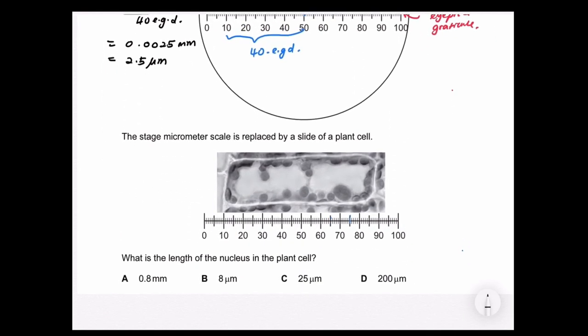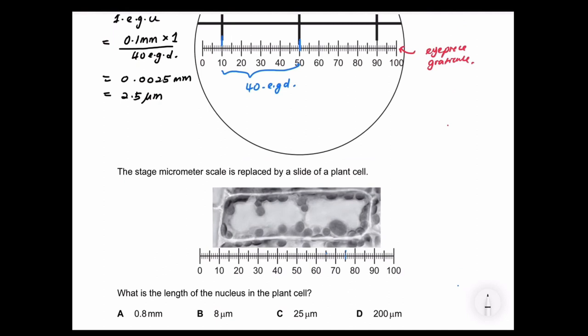Now look, read the question and see what is expected. The question wants, what is the length of the nucleus in the plant cells? So can you identify where is the nucleus? Because they show that this is a slide of the plant cells. Don't go and measure the whole cell. If you measure the whole cell length, then you wouldn't be able to get the answer. You have to identify the nucleus.